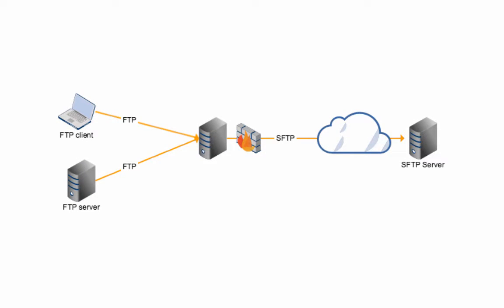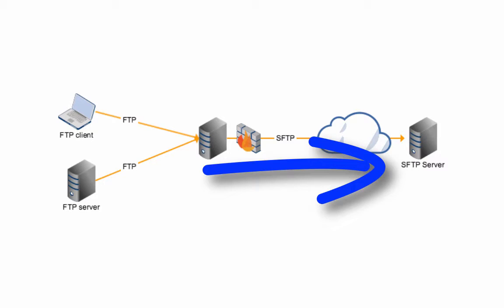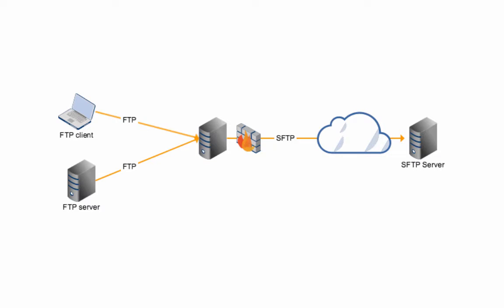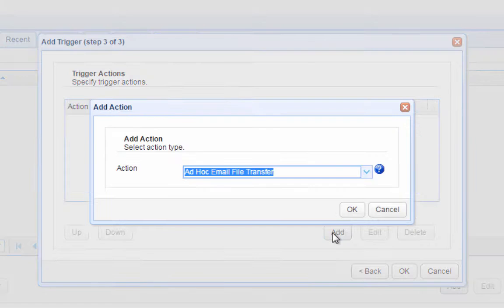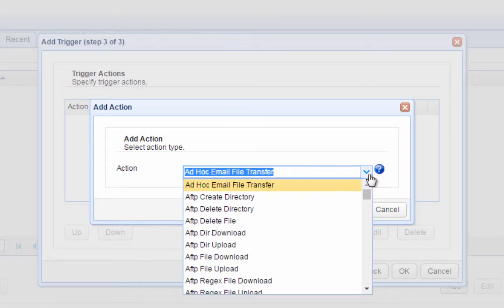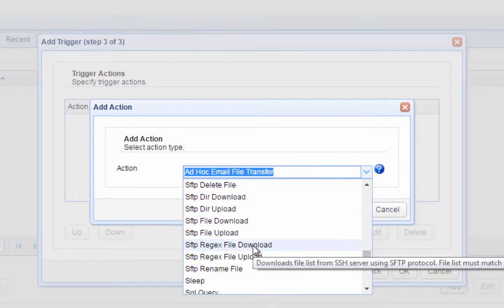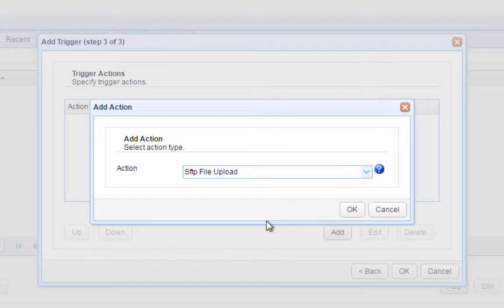Now it's time to add the Trigger action. A Trigger action is the action you want the trigger to carry out in response to the file upload. In our case, we'd like the trigger to forward the recently uploaded file to an SFTP server. One action suitable for this purpose is the SFTP File Upload Trigger action. Click the Add button to start adding the Trigger action, select SFTP File Upload, and then click OK.